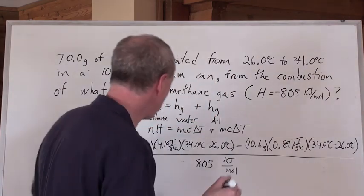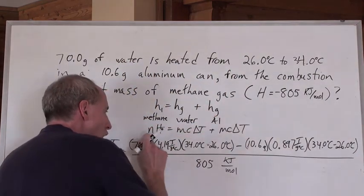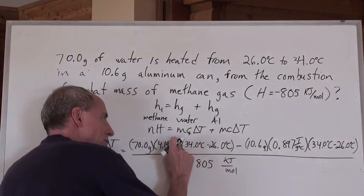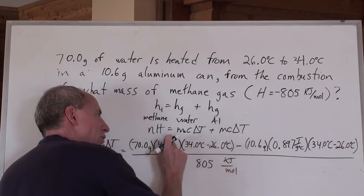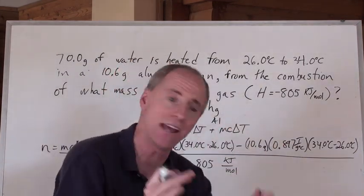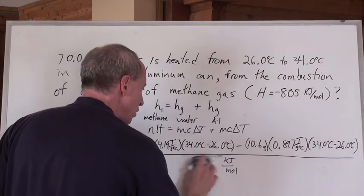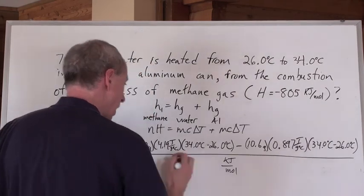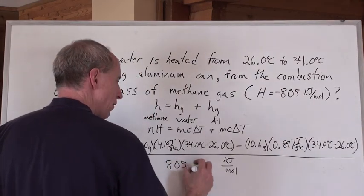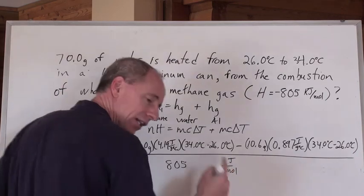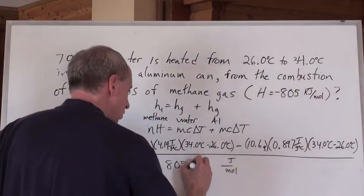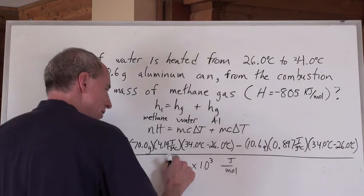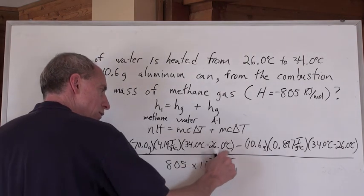But isn't this easy just to be able to say, look, if I've got joules here, because all of this cancels - grams cancels grams, degrees Celsius cancels degrees Celsius, I'm left with joules. I'm left with joules. I've got to have joules. I can't have kilojoules. So you can actually write, and this is what I would do, 805. Now, to turn that into joules, a kilo is 10 to the 3. So just go times 10 to the 3, which is 805,000 joules per mole.